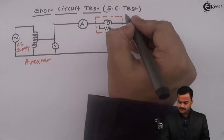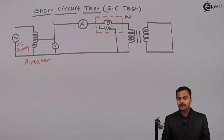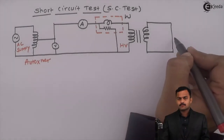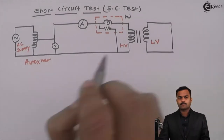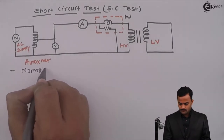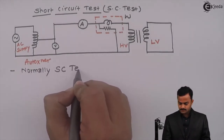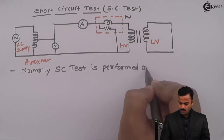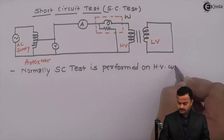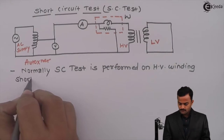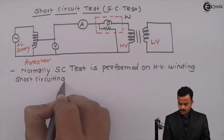All meters are connected at the high voltage side, meaning we are performing the short circuit test on the high voltage winding, short circuiting the low voltage winding.